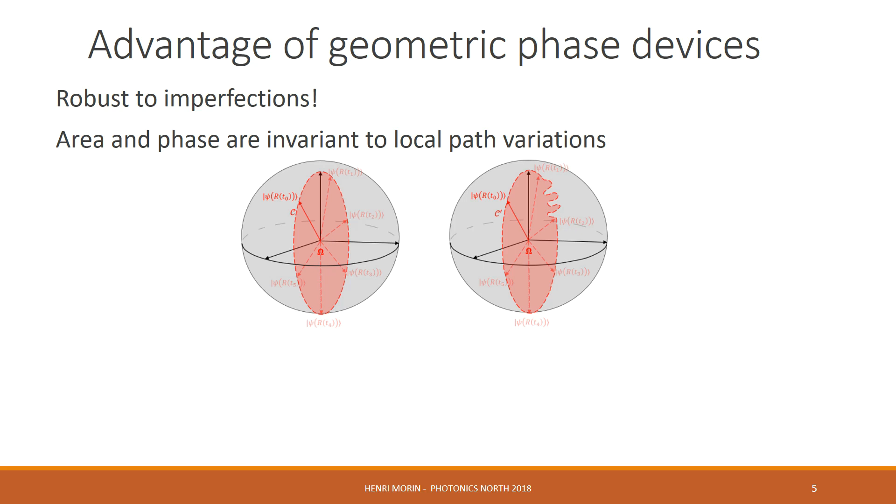If these perturbations are done in an area-preserving way, then overall, the system will acquire the same geometric phase in both cases and have the same output at the end. And this is specifically where the robustness comes in.